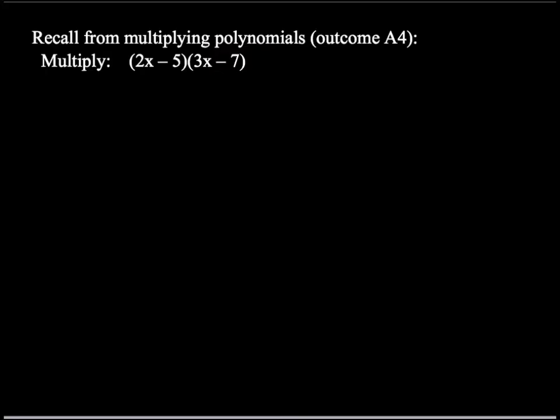Okay, so we have to recall that for multiplying polynomials, we multiply every term of the first polynomial times every term of the second polynomial. So to multiply (2x - 5)(3x - 7), we take 2x times 3x, which is 6x².